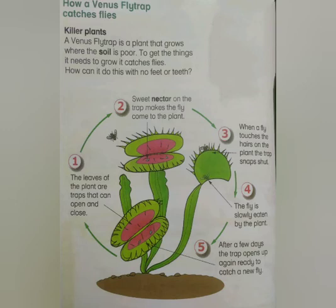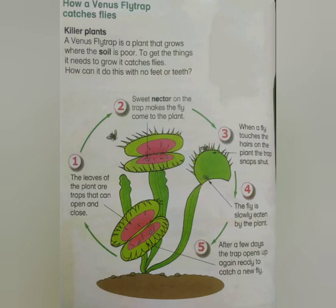The leaves of the plant are traps that can open and close. Inside these traps there's sweet nectar, which makes flies come into the plant. When a fly touches the hairs on the outside of the plant's mouth, it snaps shut. When the fly is trapped inside, it is slowly eaten by the plant. After a few days of the plant eating the fly, it will slowly open, ready to catch more flies, bees, and any other insects.